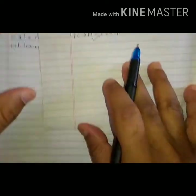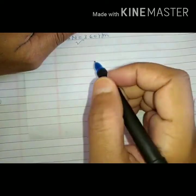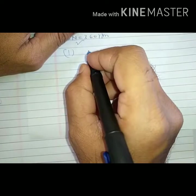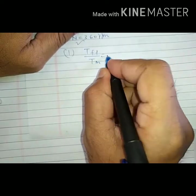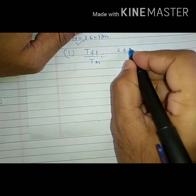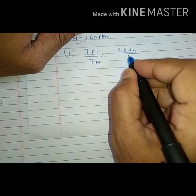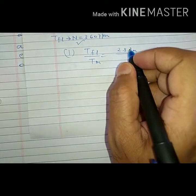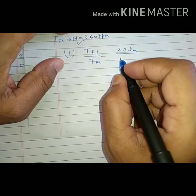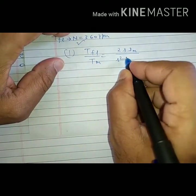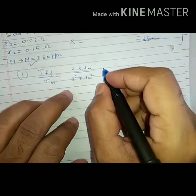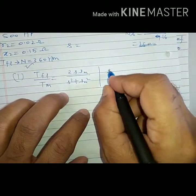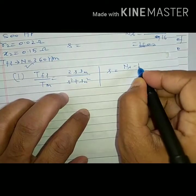First is TFL by TM. We know TFL by TM equals twice SM divided by S squared plus SM squared. We must find these slip values. Slip equals NS minus N by NS.